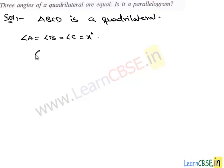And we know that the sum of the interior angles of any quadrilateral is equal to 360 degrees. Therefore we get 3x plus angle D is equal to 360 degrees.